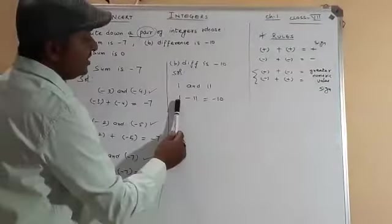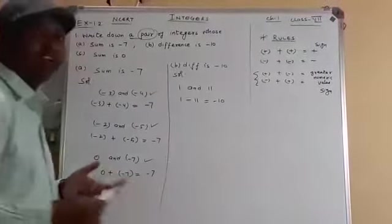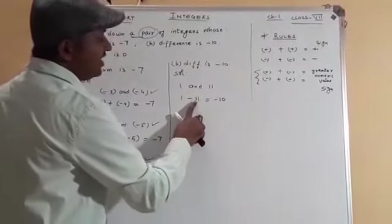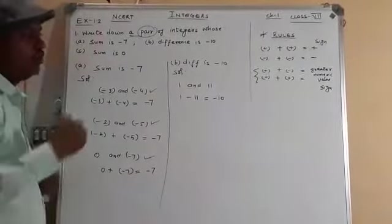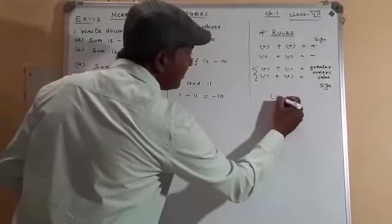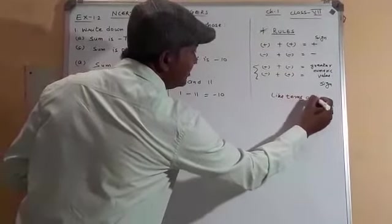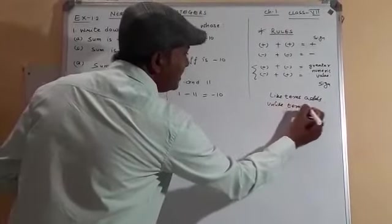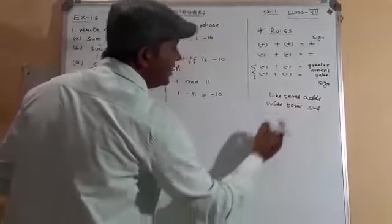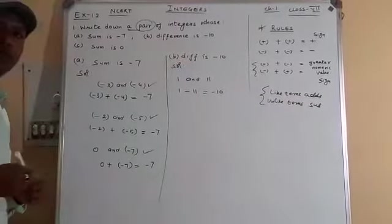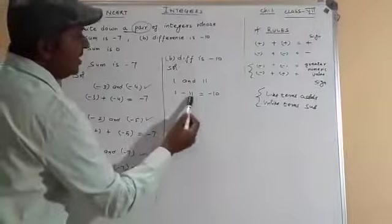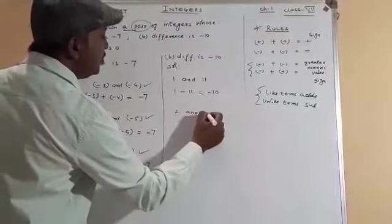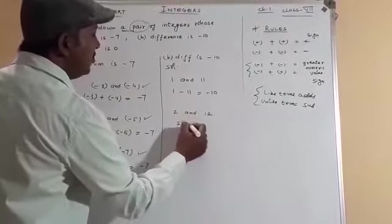Like terms add, unlike terms subtract. These are the rules. So 1 - 11 = -10. Take another example: you can take 2 and 12. 2 - 12 will give you -10.